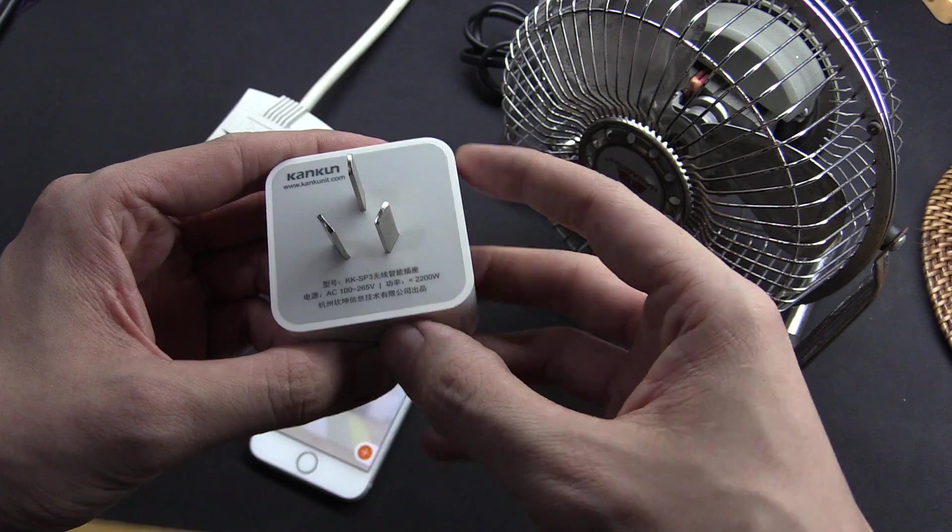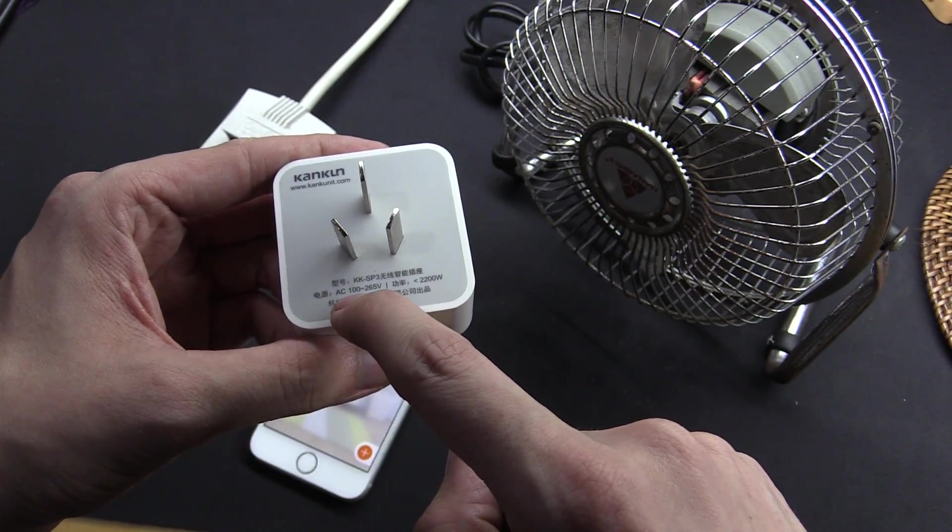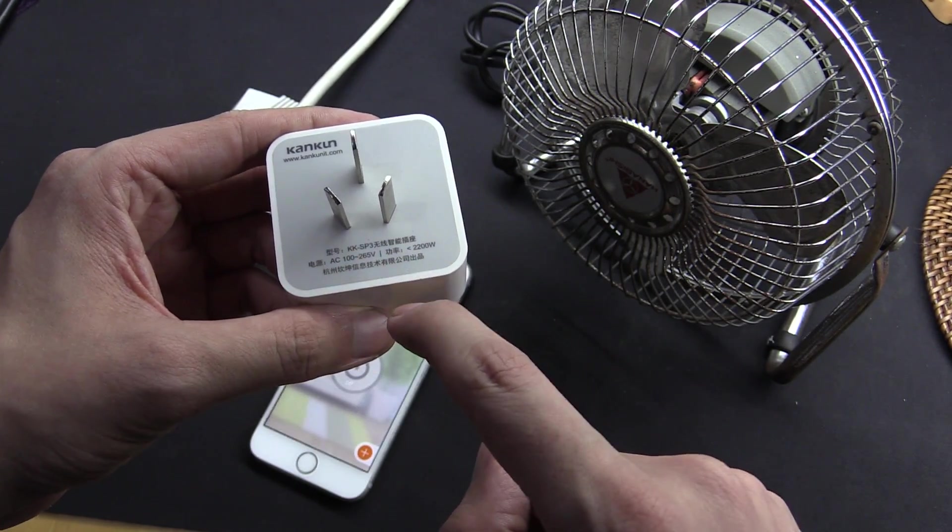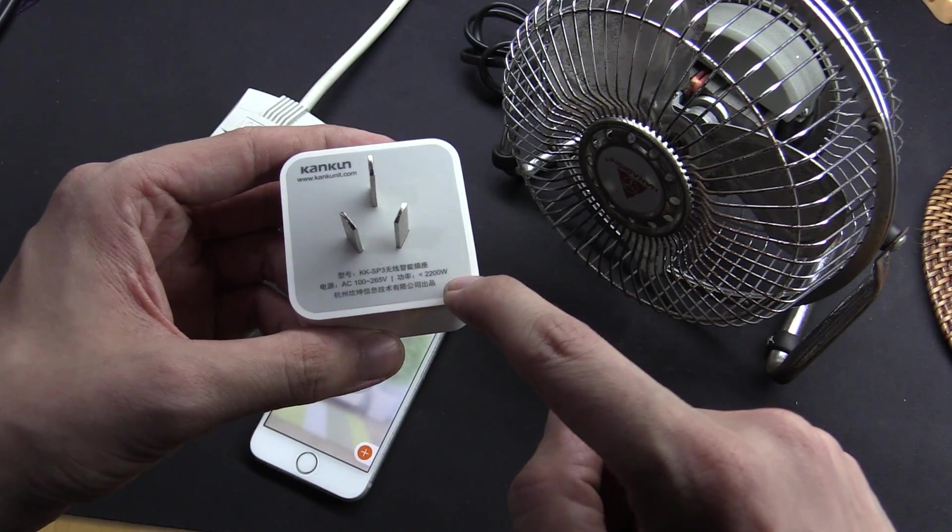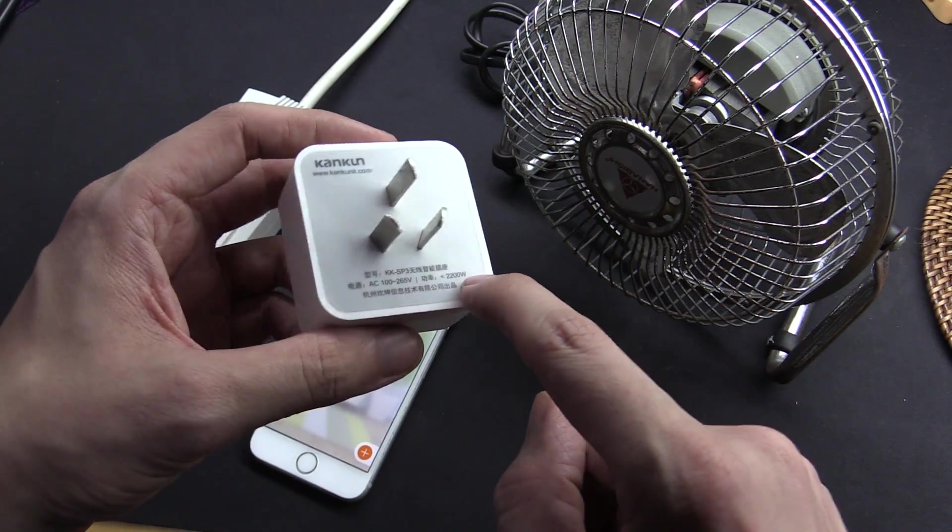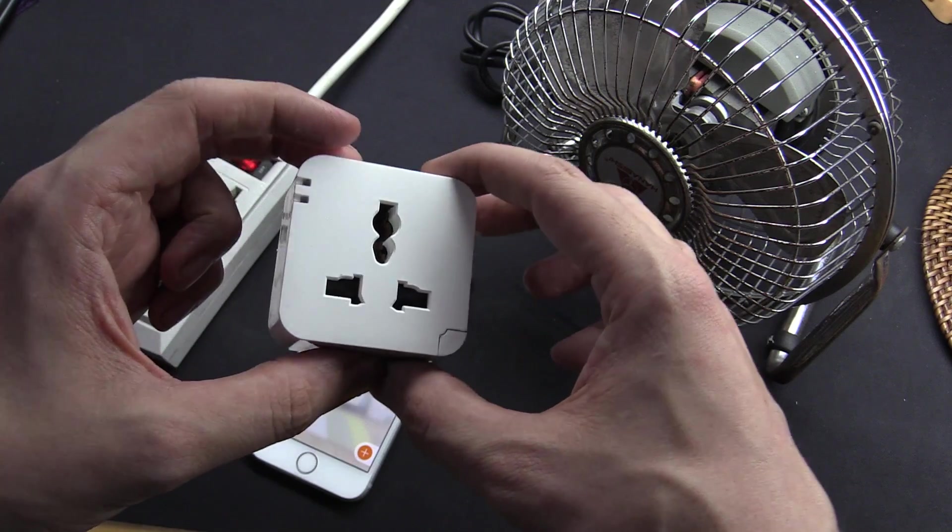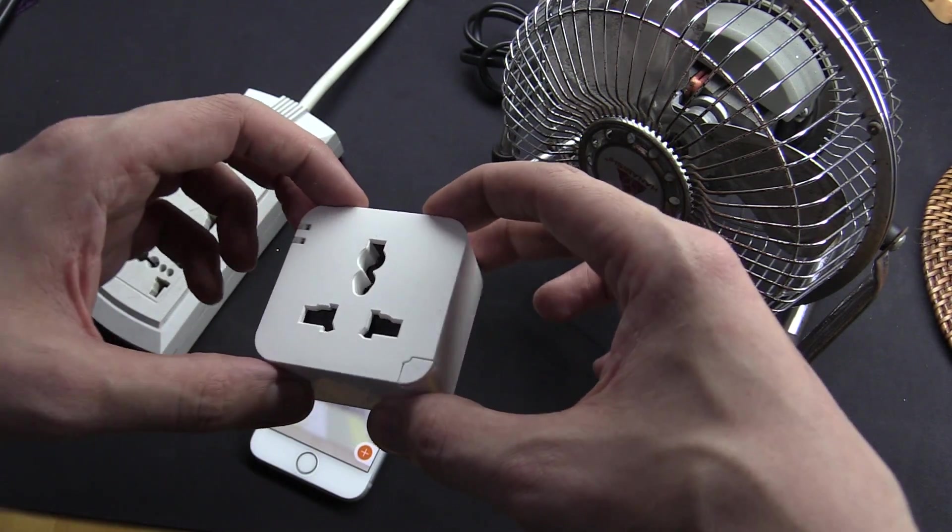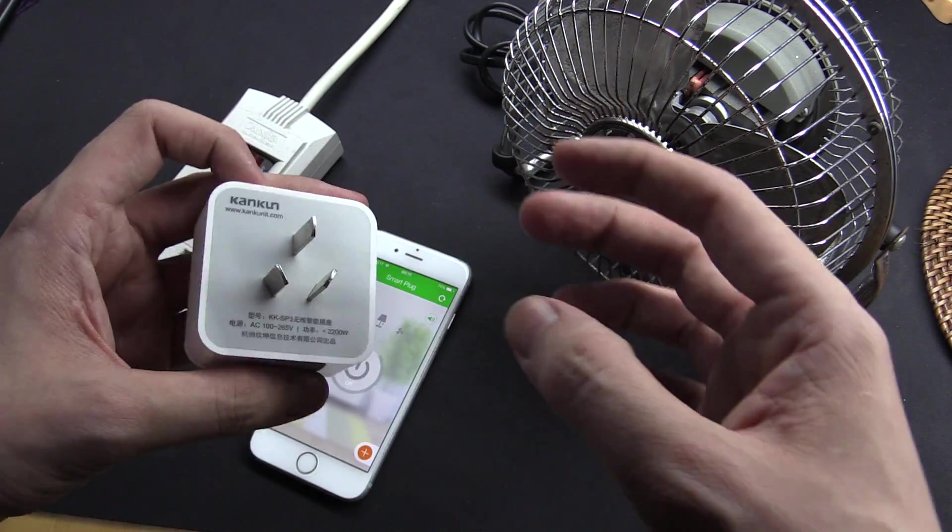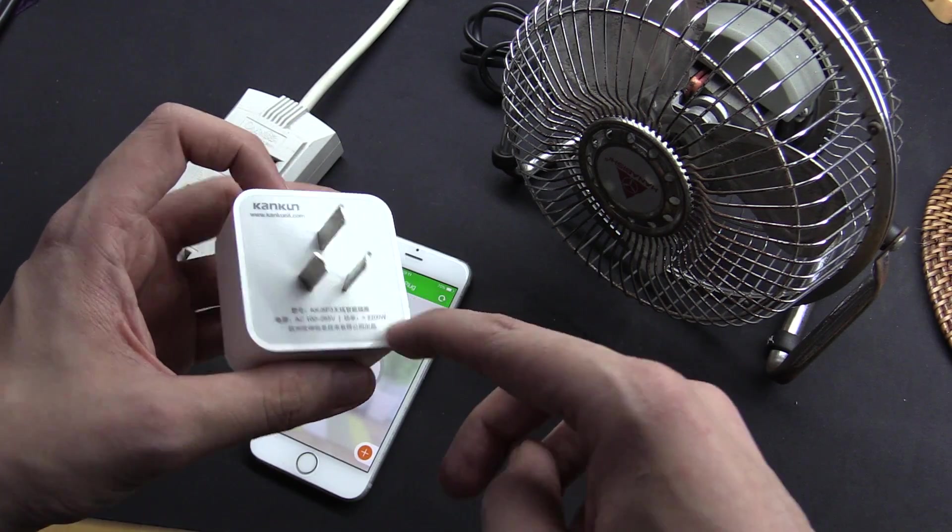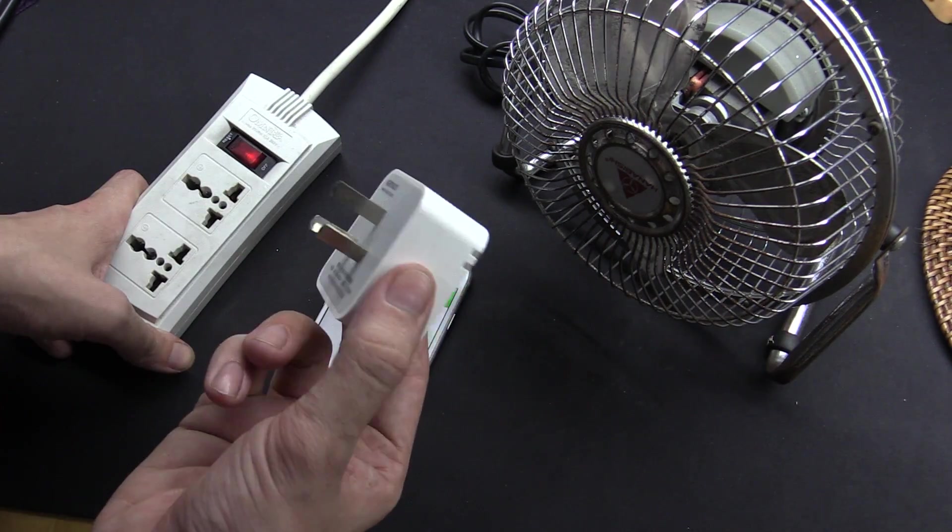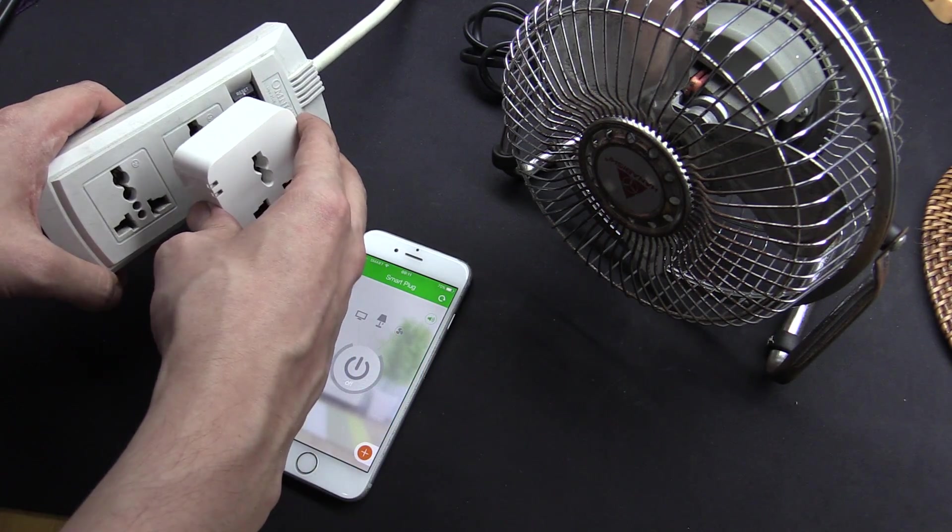Now, if we look at the back of the socket, you'll see it's rated for anywhere from 100 volts to 265 volts. So that's AC, of course, and it says the load has to be under 2,200 watts. So potentially, you could put quite a heavy load on this, although my recommendation would be to try and keep it a little bit lower. But yeah, 2,200 watts is a very heavy load. Now, using this thing is very simple. Simply plug it into your socket.